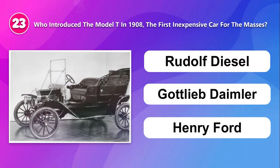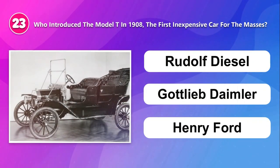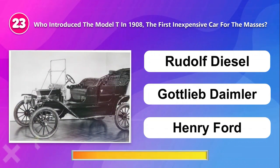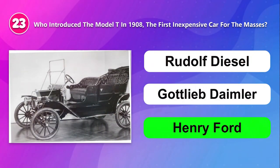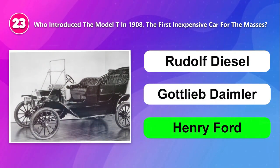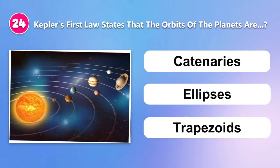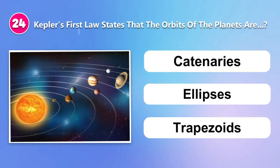Number twenty-three: Who introduced the Model T in 1908, the first inexpensive car for the masses? Rudolf Diesel, Gottlieb Daimler, or Henry Ford. Number twenty-four: Kepler's first law states that the orbits of the planets are catenaries, ellipses, or trapezoids.